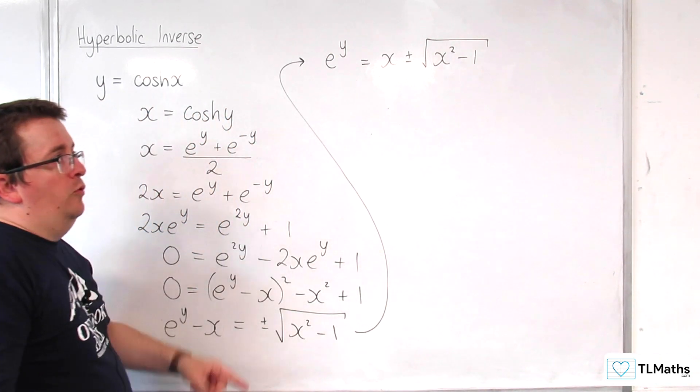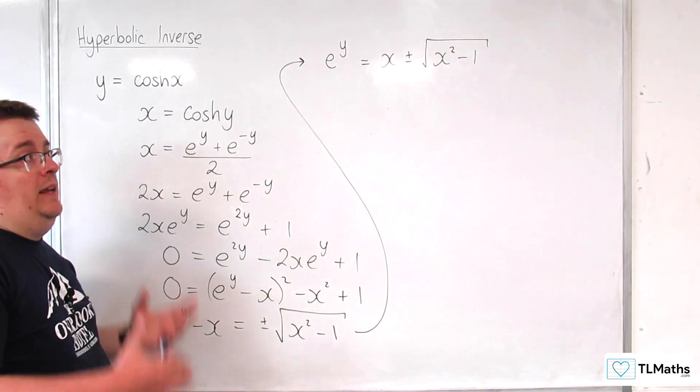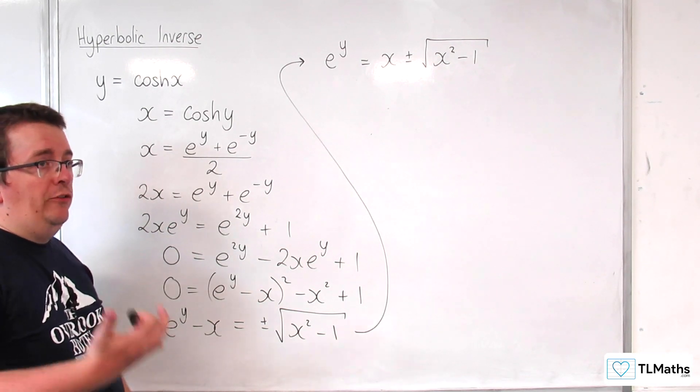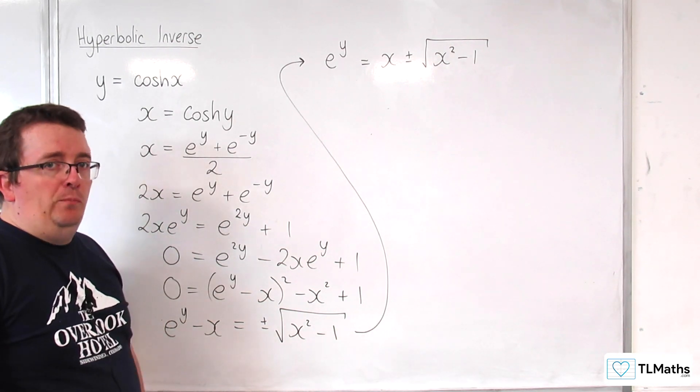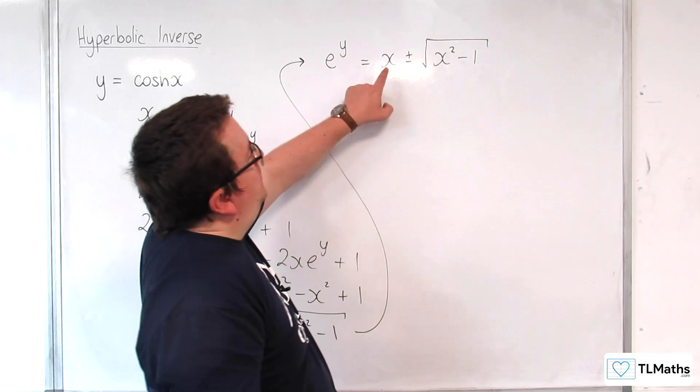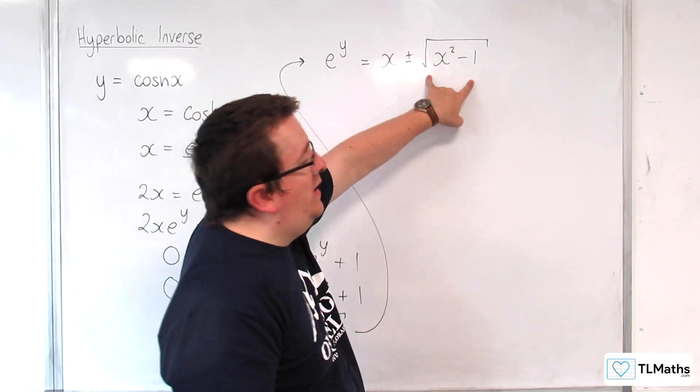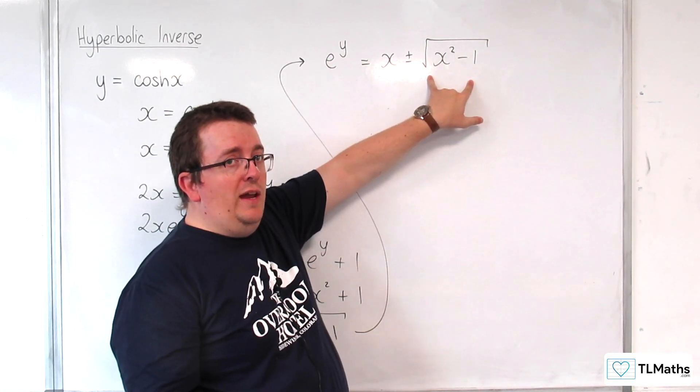Now the problem there is that x squared, take away 1, when you square root it, is going to be smaller than x. So x, take away this, is positive. We do get a positive result.